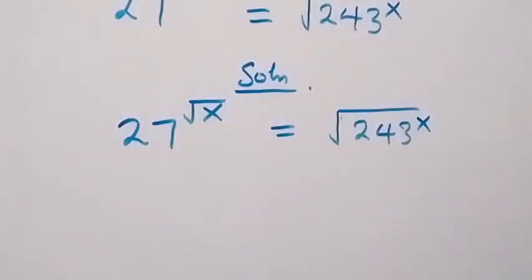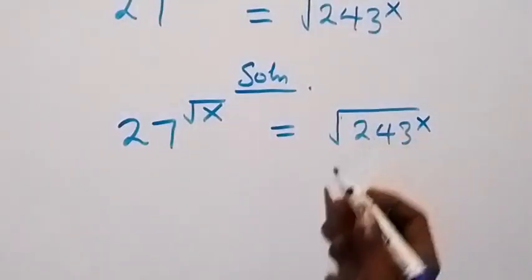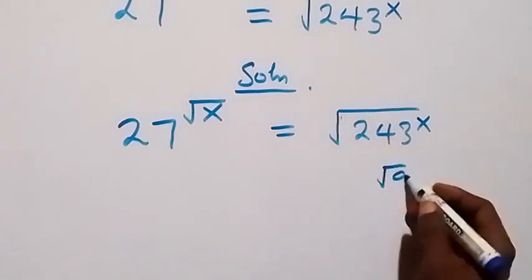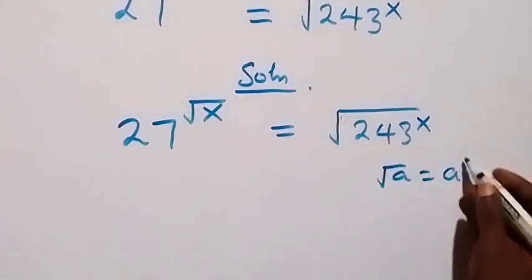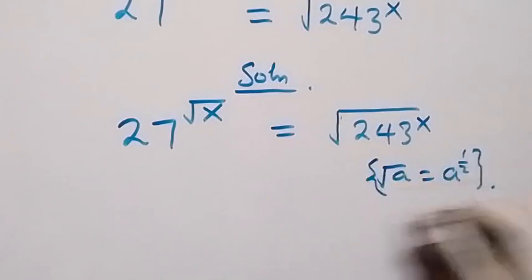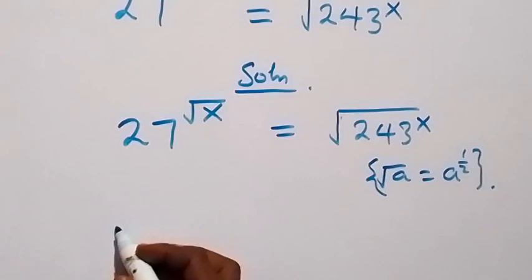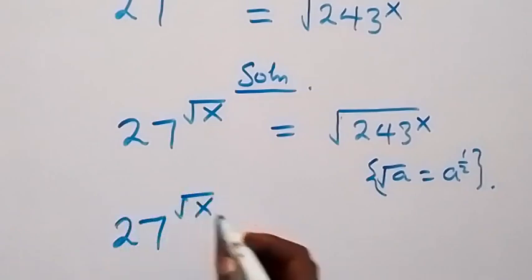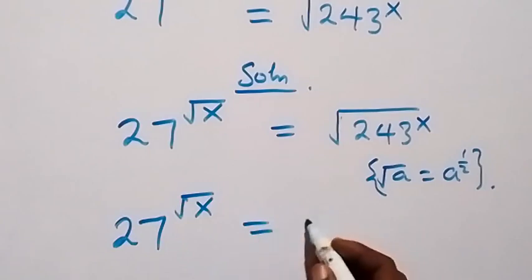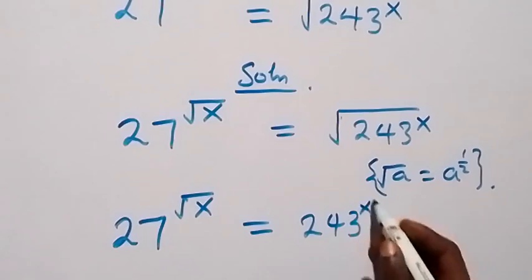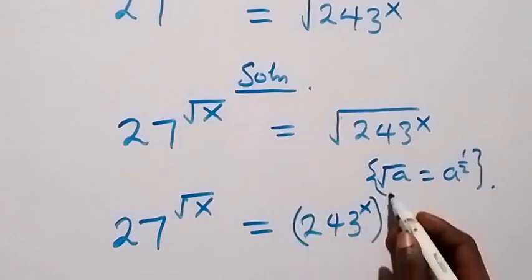From here, we can rewrite the square root — the same thing as root a is the same thing as a raised to power half. That means this will become 27 raised to power root x, equals to 243 raised to power x, then raised to power half.